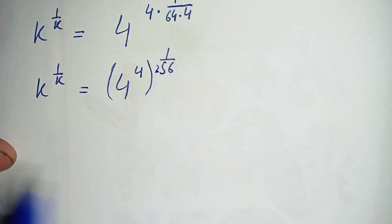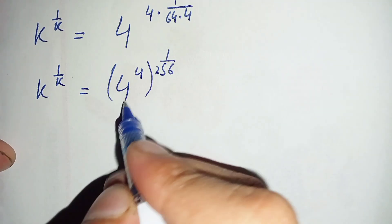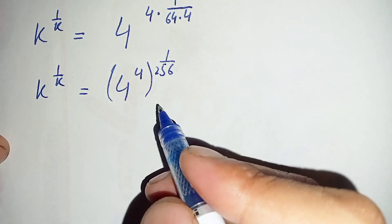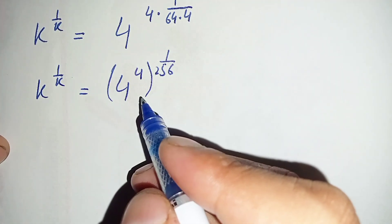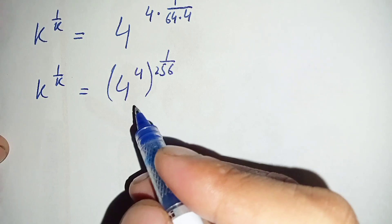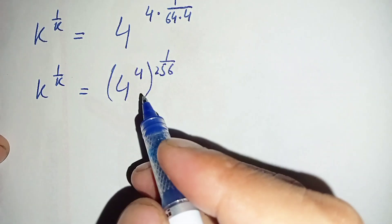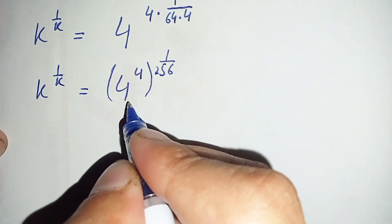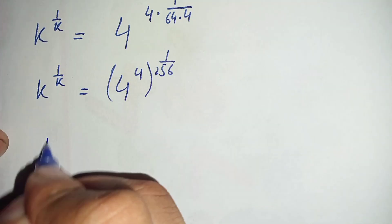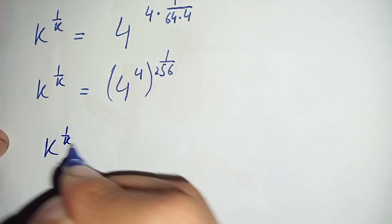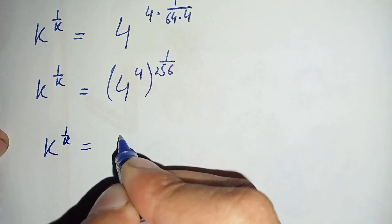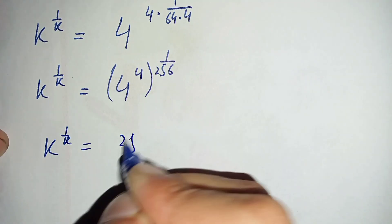Now we find the value of 4 raised to power 4. We have 4 times 4 is 16, times 4 is 64, times 4 is 256. So the base 4 raised to power 4 equals 256. This gives us k raised to power 1 over k is equal to 256 raised to power 1 over 256.